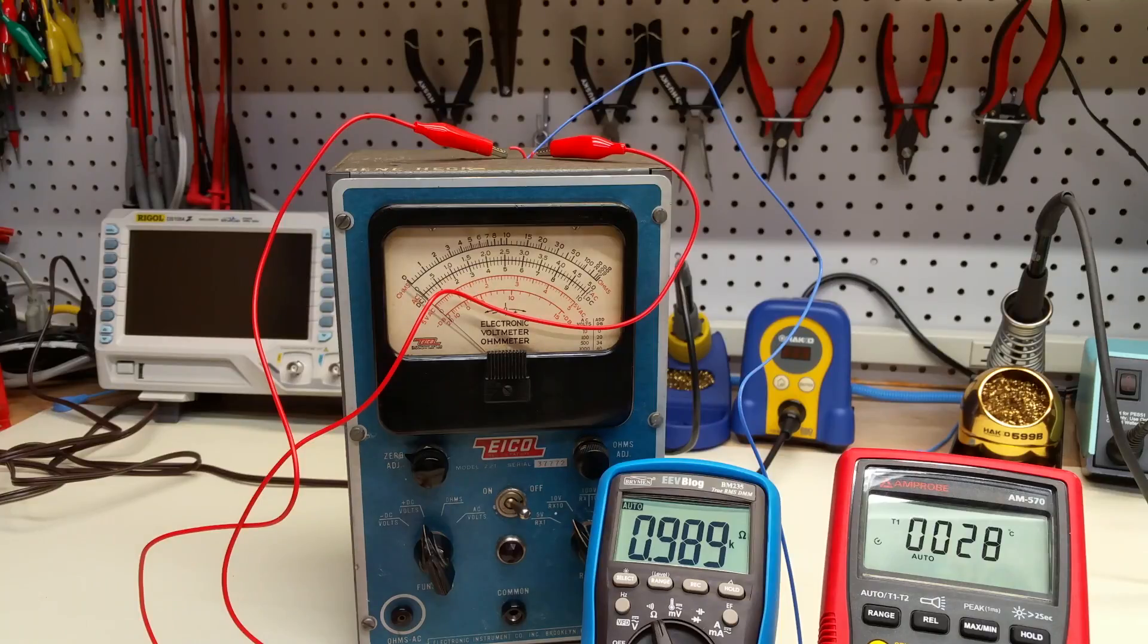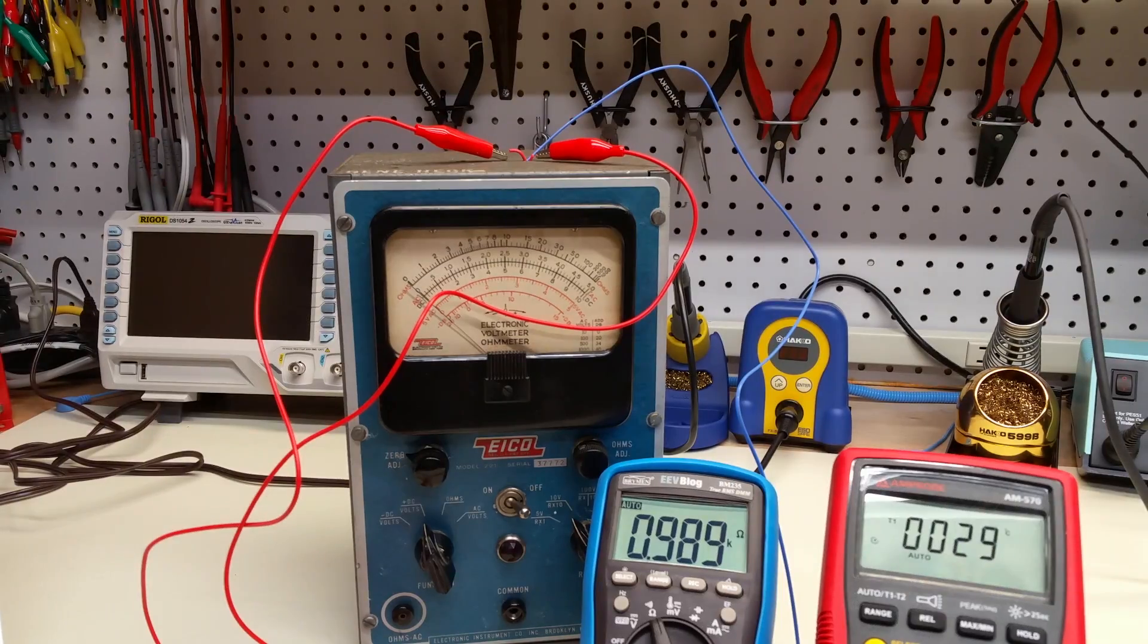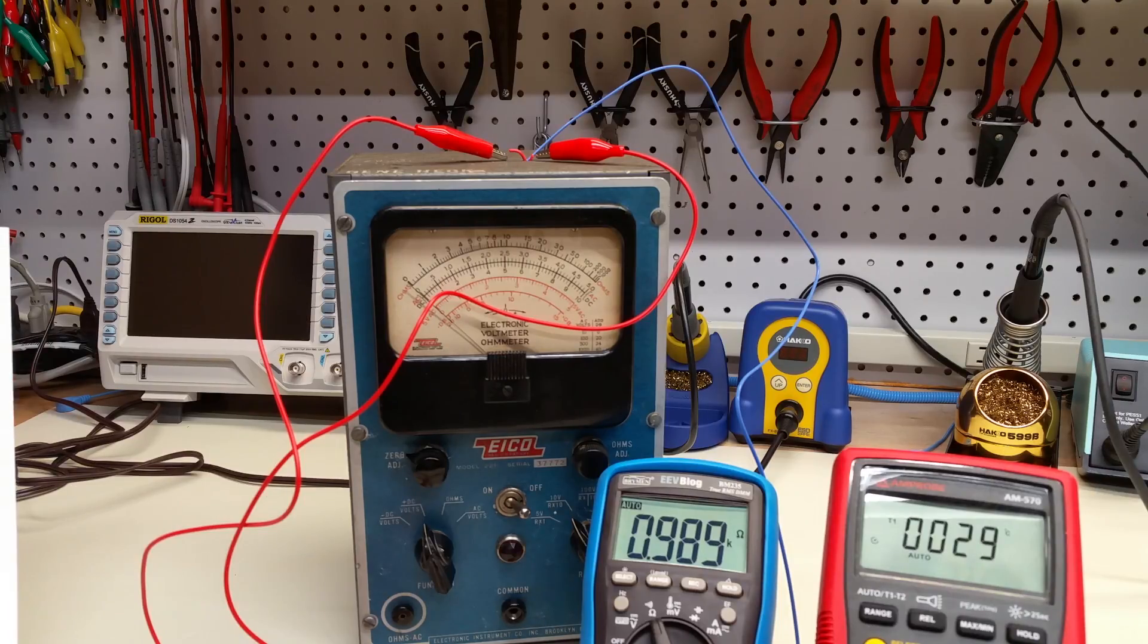Now, are these numbers reasonable? The answer is, yeah, they are reasonable. If you look up online or in reference books what the alpha is for just pure carbon, you get about negative 5 times 10 to the minus 4, which is 500, negative 500 parts per million per degree C. That is absolutely in the ballpark of what we just measured for the carbon composition and the carbon film resistor.